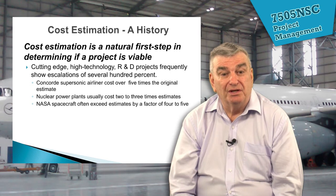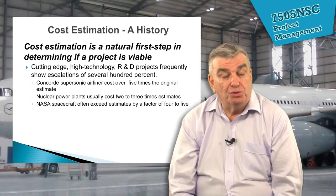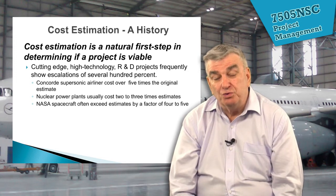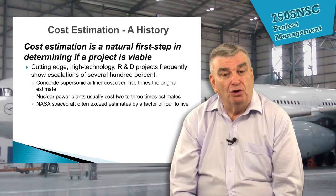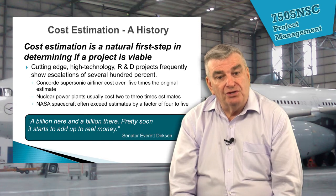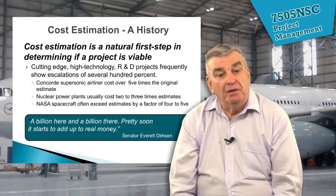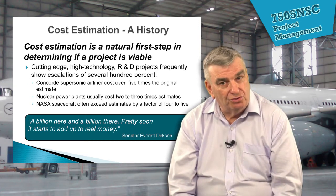Concorde cost over five times the original estimate. Nuclear power plants usually cost two to three times estimates — and nuclear power plants are now part of aerospace technology. NASA spacecraft often exceed estimates by a factor of four to five. We know from both the Airbus A380 and the Boeing 787 that there were huge cost overruns because they encountered problems they just didn't expect. As Senator Everett Dirksen said at a US Senate Estimates hearing: 'A billion here, a billion there — pretty soon it starts to add up to real money.' Tongue in cheek, but it's true on projects.